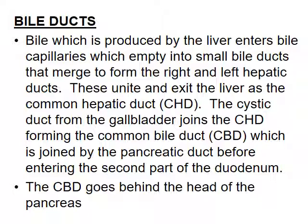Importantly, the common bile duct goes behind the head of the pancreas, and when it does, we cannot see it on ultrasound. We can trace a duct down to the head of the pancreas, but we can't see it from the head of the pancreas to the second part of the duodenum. If I can't see anything but I've got dilated ducts, I'm going to say I can't see it but I know something is going on in that head of pancreas area, and then they'll need a CT scan. It's important to know not only what we can see, but also what we can't see and what further imaging is needed.